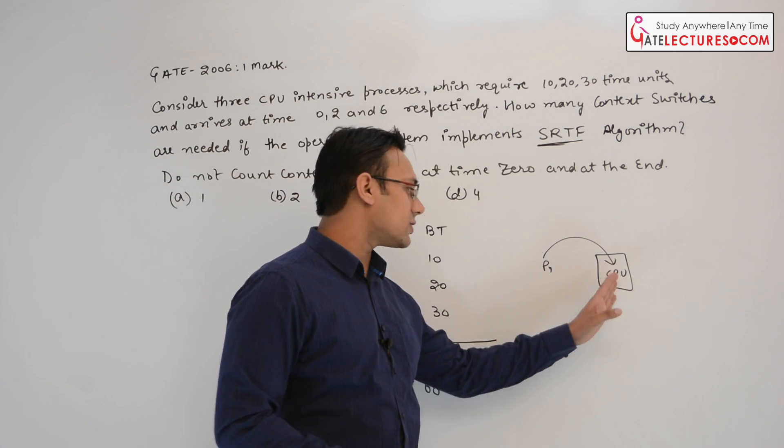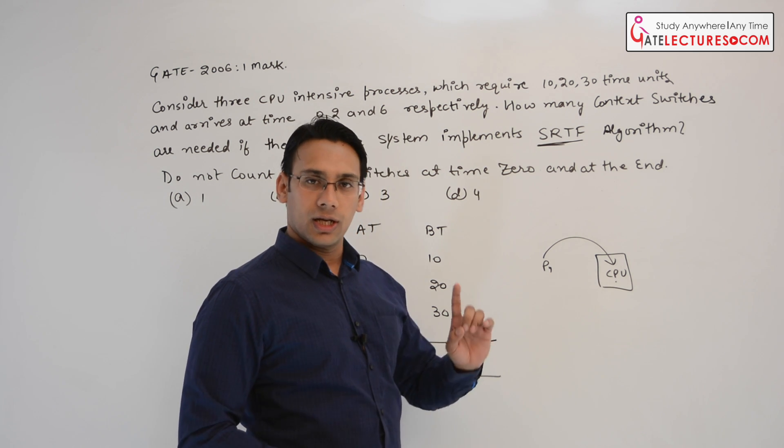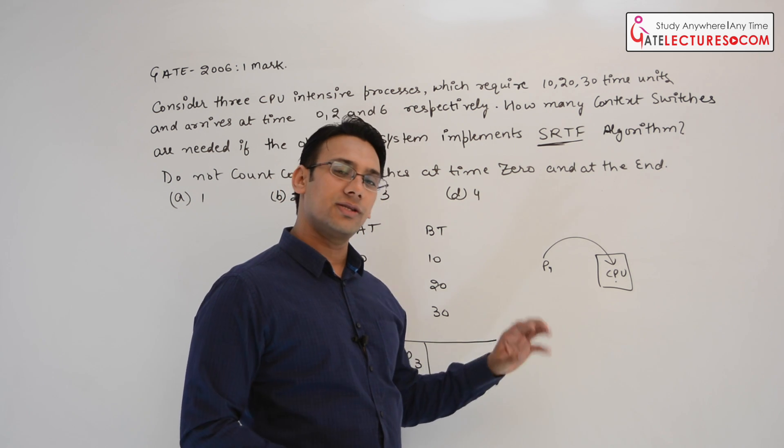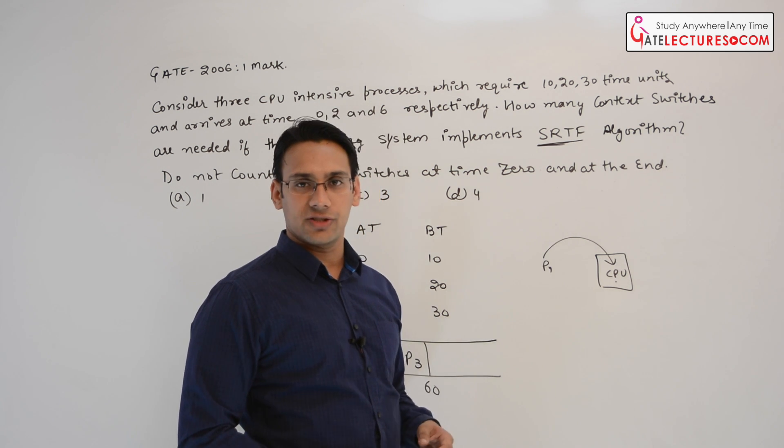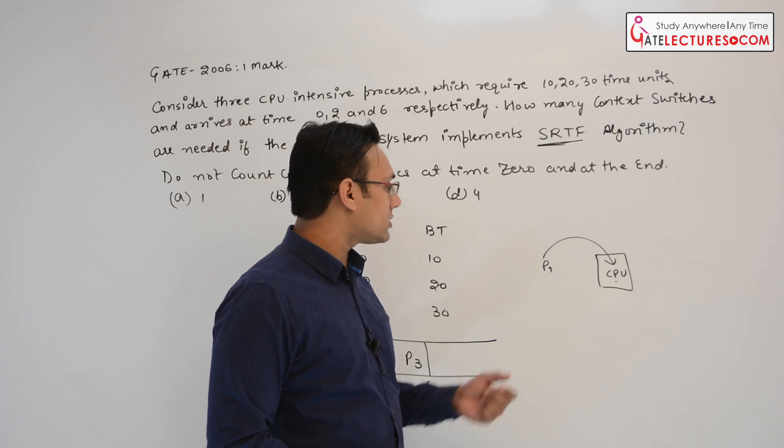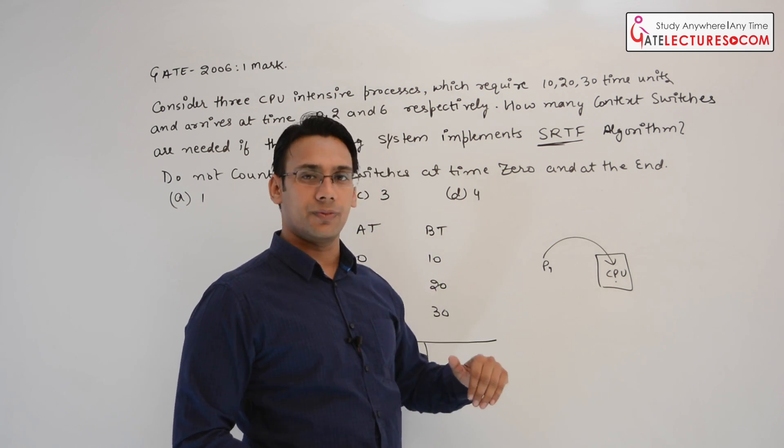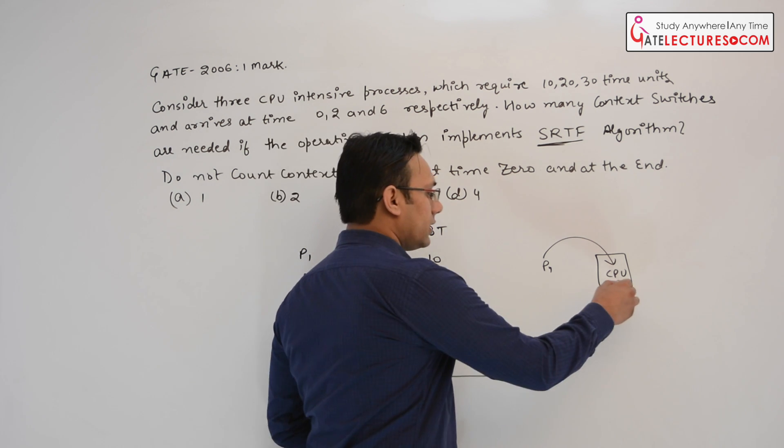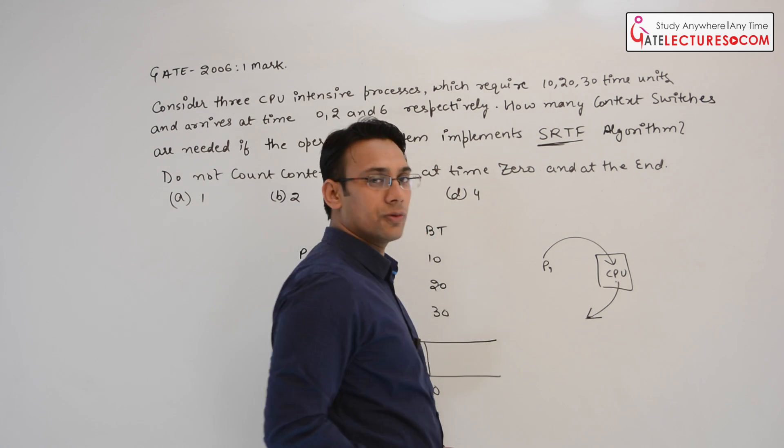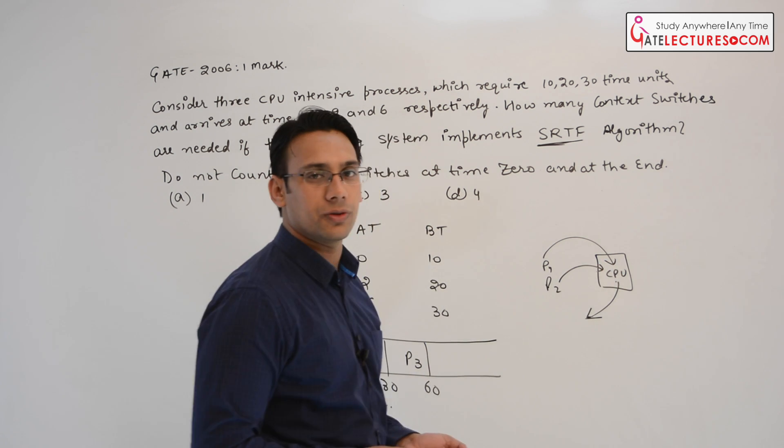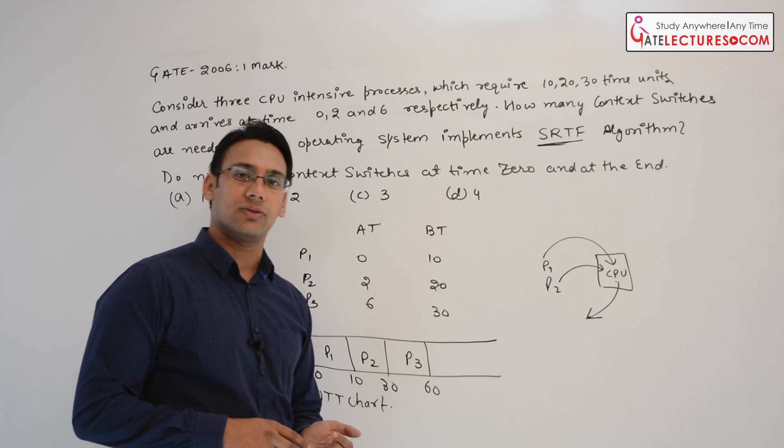There can be two scenarios when process P1 can come out of the CPU. Number one scenario is the process P1 has already completed. Now it is the turn of next process to go inside the CPU. Or the second scenario is process P1 is going to come out of the CPU because of preemption. Now if you take process P1 from CPU and if you take another process P2 into the CPU then this is called as a context switch.